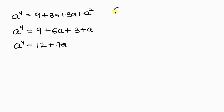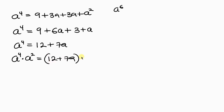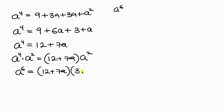Now to get a to the 6th, we multiply both sides by a squared. So a to the 6th equals (12 plus 7a) times a squared, and substituting our starred result, a squared equals 3 plus a, giving (12 plus 7a) times (3 plus a).